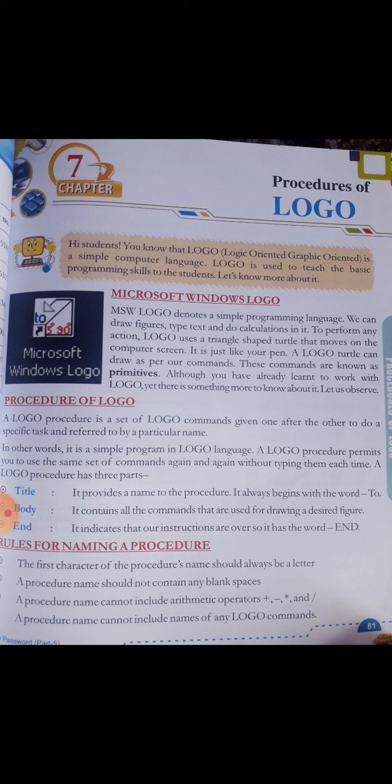It contains all commands that are used for drawing a desired figure — the body contains the commands you give to design a figure as per your wish, that is the drawing you prepare there. This is called the body. And then there is 'end' — it indicates that our instructions are over. When all our instructions are finished and the figure is ready, you need to write 'end' to conclude.